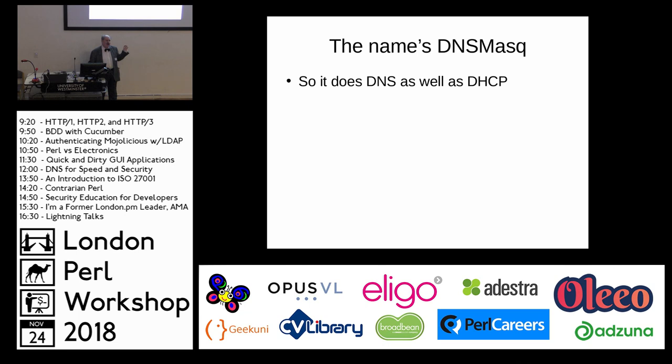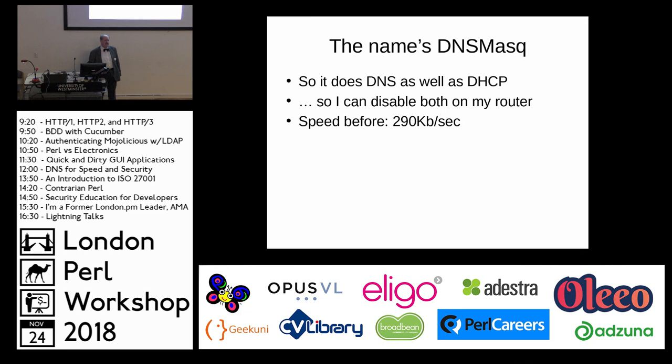I had a router doing my DNS. What would happen if I switched off the DNS on the router and just let dnsmasq do its real job? Surely a Raspberry Pi isn't going to keep up with dedicated hardware? My speed beforehand was 290 kilobytes per second on a standard download. I switched everything over to the Pi — one happy result.